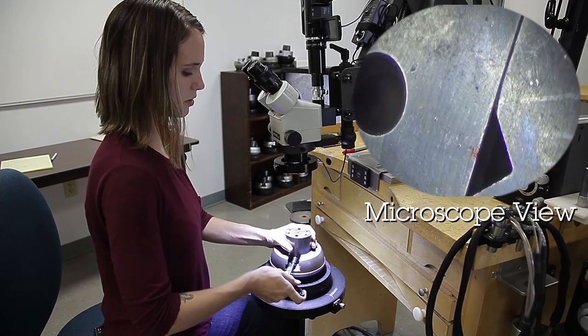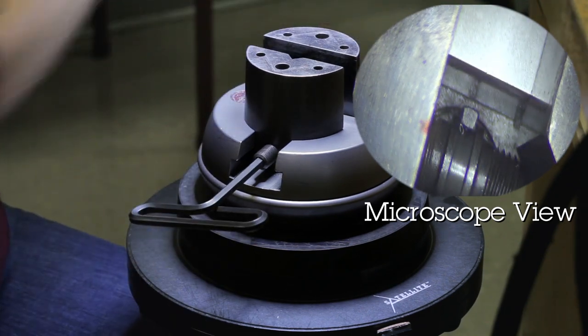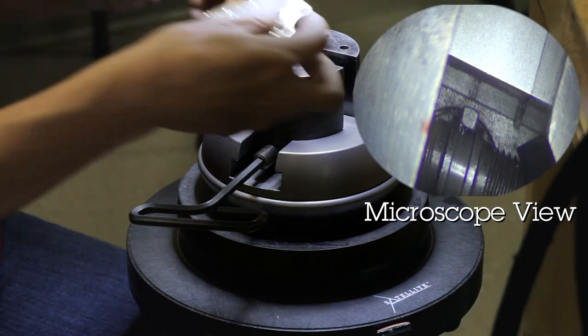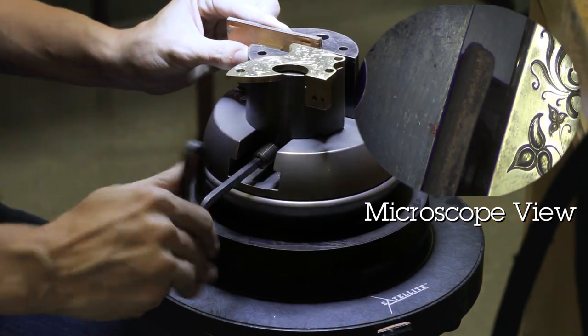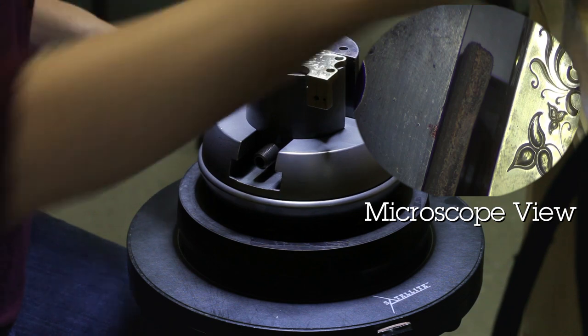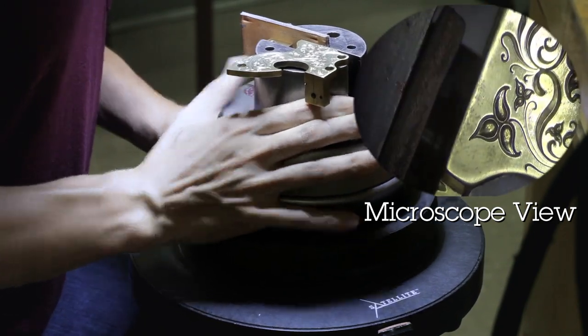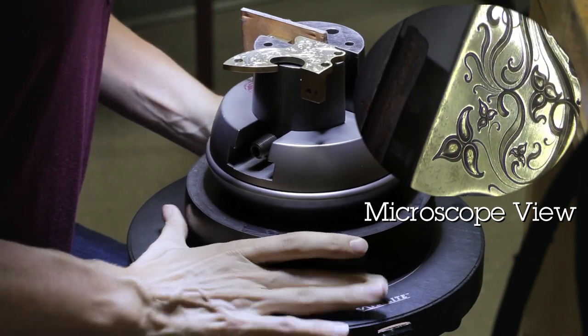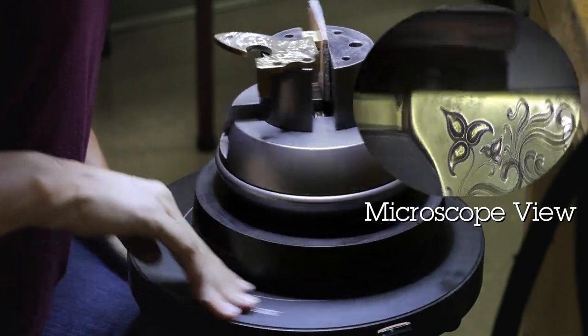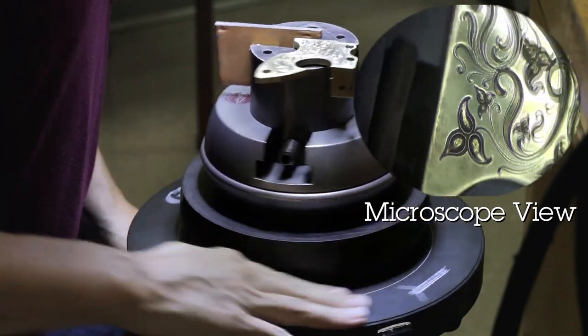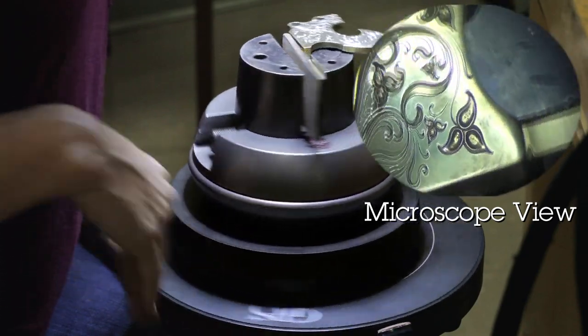Go ahead and open our vise back up. Put our workpiece back in here. And now I can move that flower into the center of my view by moving the vise. And when I turn the turntable, it should stay center underneath of my microscope. We're no longer having to chase it around.